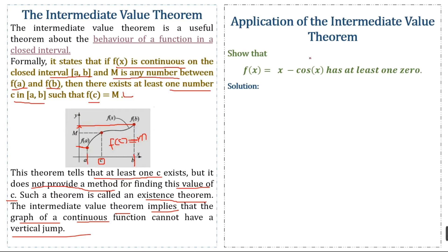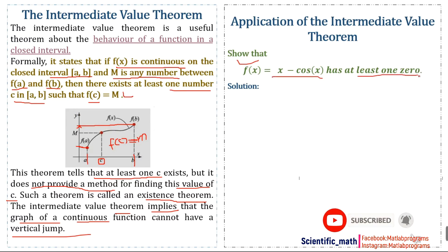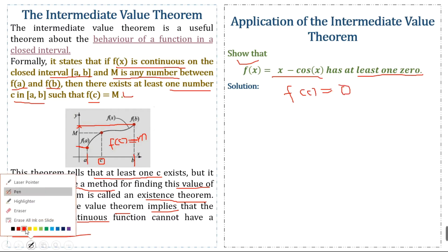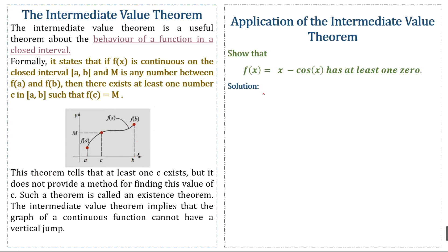Now we discuss the application of the Intermediate Value Theorem. Show that the function f(x) = x - cos(x) has at least one zero. We have to show this function has at least one zero — a point c at which the value of the function equals zero.